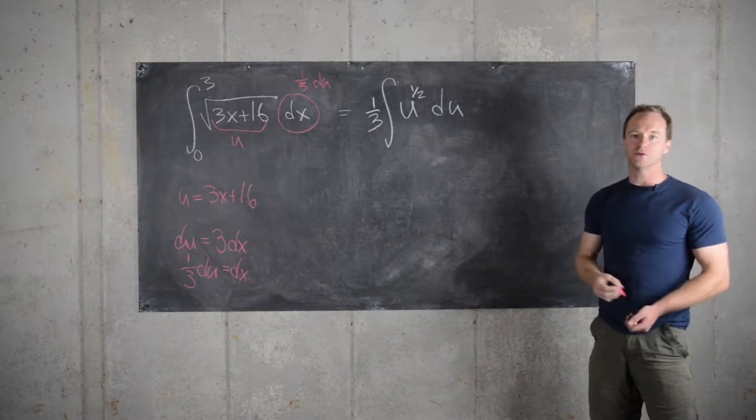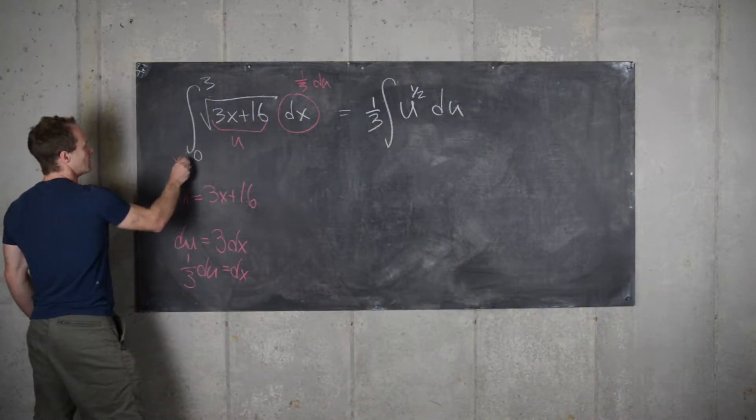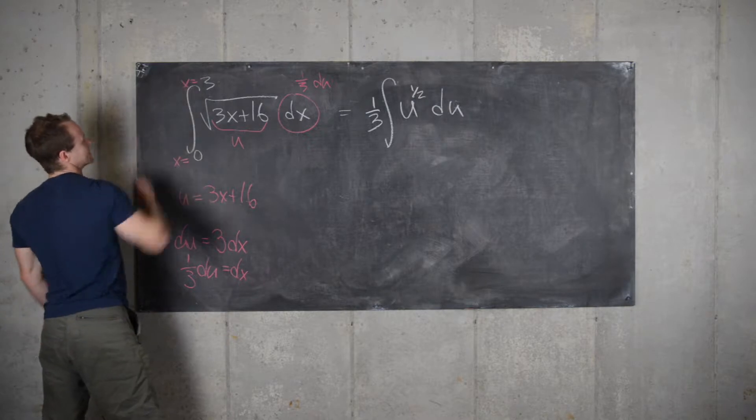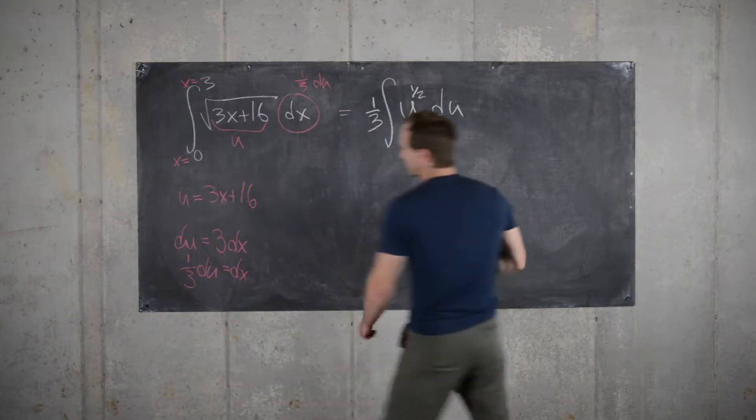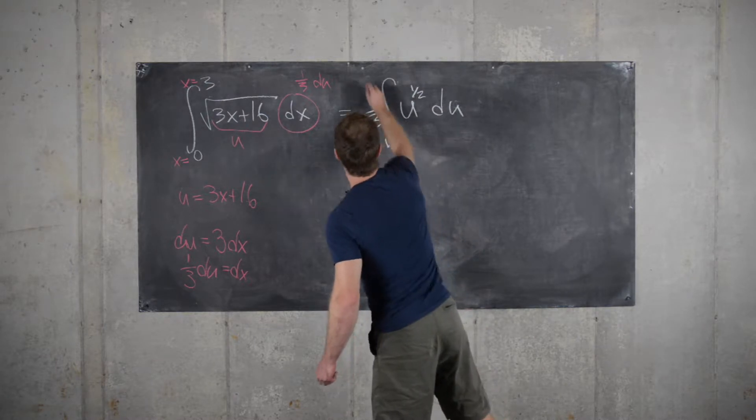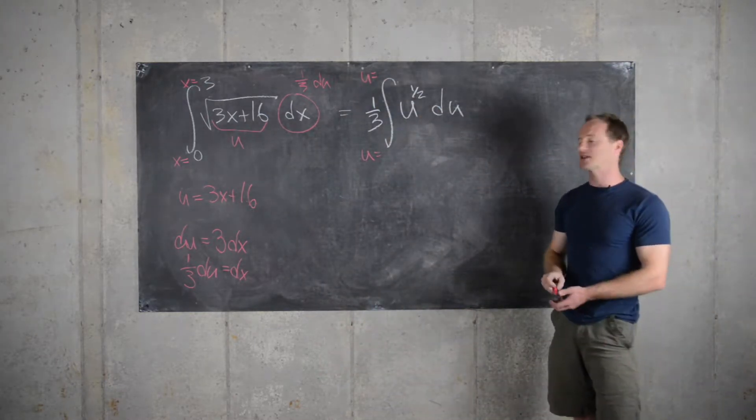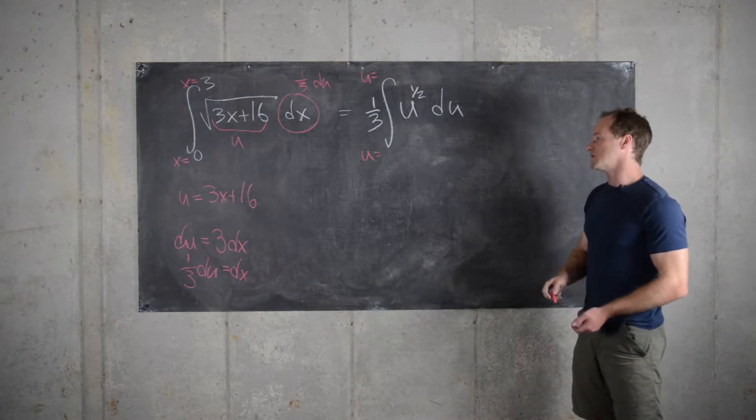Now we have to think about what we do with the bounds of integration. Over here we can see that these are x-number bounds for the integral in terms of x, but what we can do is change those to u-number bounds and never go back to the original variable.